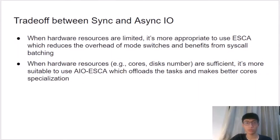We discuss when to use ECOS versus ECOS with AIO. When hardware resources are limited, it is more appropriate to use ECOS, which reduces the overhead of mode switches and benefits from system call batching. However, when hardware resources are sufficient, it is more suitable to use ECOS with AIO, which offloads tasks and makes better use of core specialization.